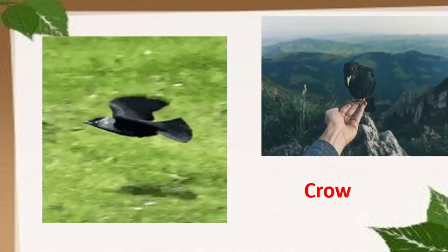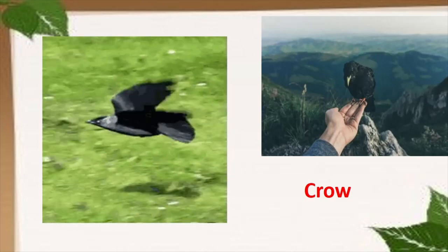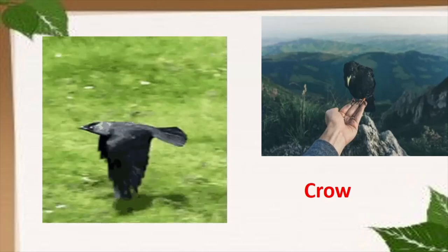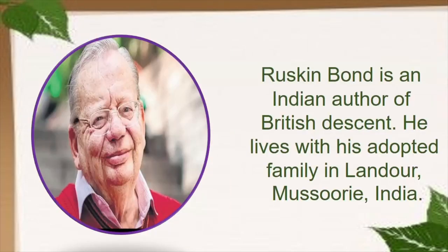We very seldom see people keeping crows as pets, but in this story you will see how by chance the crow becomes the pet of the family. This particular story is written by Ruskin Bond. By looking at his picture you might feel he is not Indian, but he is an Indian author of British descent — his family belonged to Britain. He lived with his adopted family in Mussoorie, India, and most of his stories and novels are based in India. So let us see the interesting story of 'A Crow in the House.'